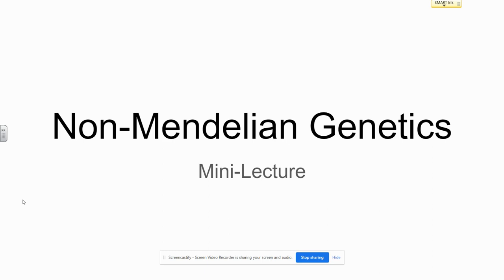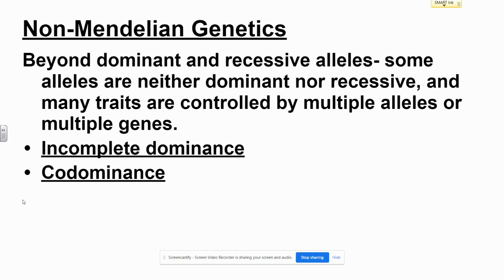Remember, Mendelian genetics includes three possible genotypes and two possible phenotypes. As long as one dominant allele is present in a genotype, the dominant trait will be expressed. The recessive trait is only expressed when there is a homozygous recessive genotype. But what happens when alleles are neither dominant or recessive, or when traits are controlled by multiple alleles or genes?